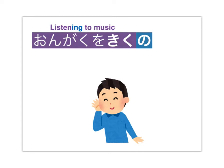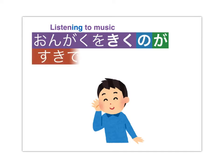To this we'll add the particle ga so we can add some additional details. Following the particle ga, we can add whatever detail we'd like — in this case, you like to do something. This gives us the sentence: Ongaku wo kiku no ga suki desu. I like listening to music.